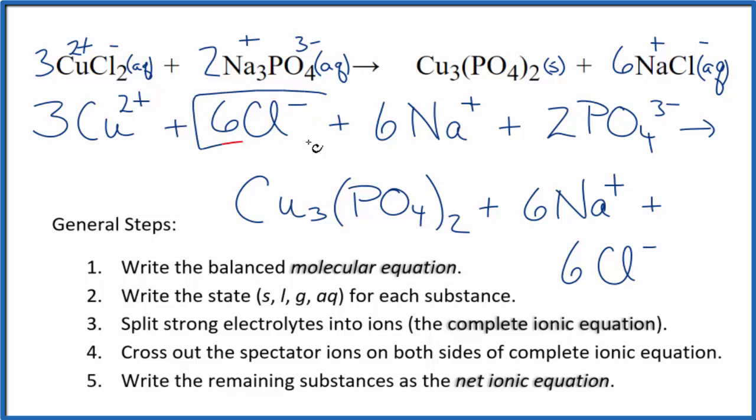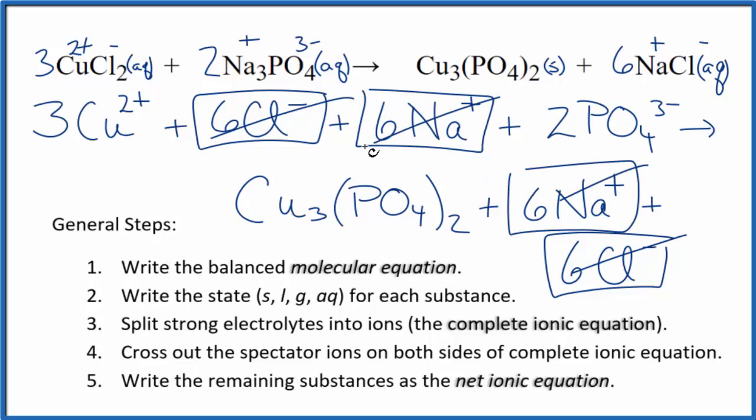So spectator ions - I've got 6 chlorides here and then 6 chlorides here. Let's cross those out. Those are spectator ions. Then I have 6 sodium ions here in the reactants, 6 in the products. Cross those out. But everything else is unique. So this is the net ionic equation for CuCl2 plus Na3PO4.